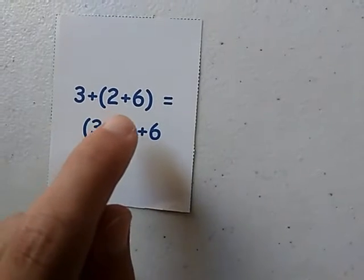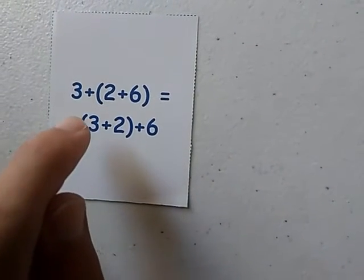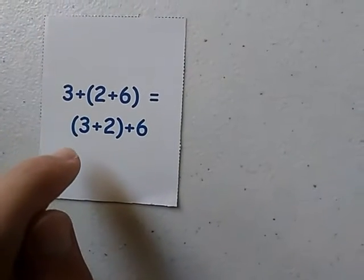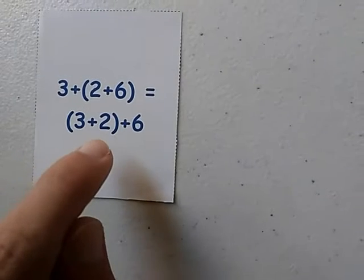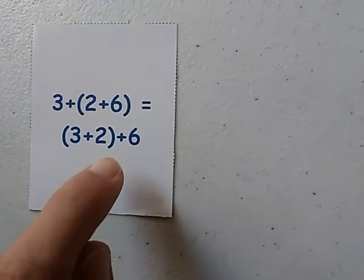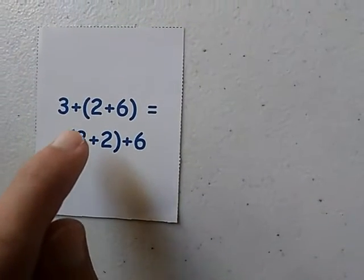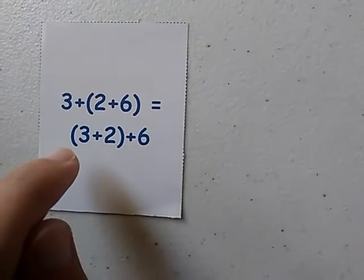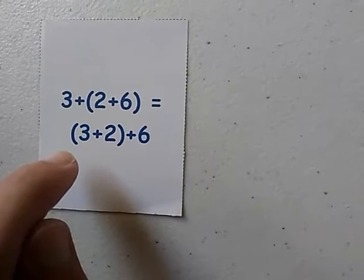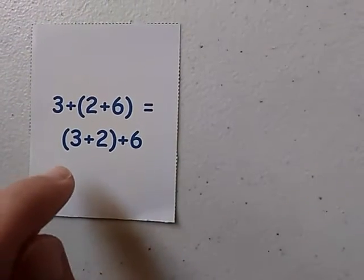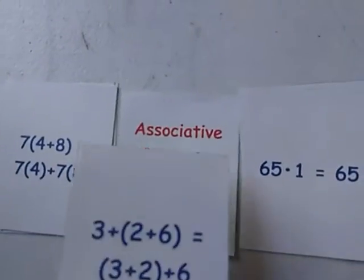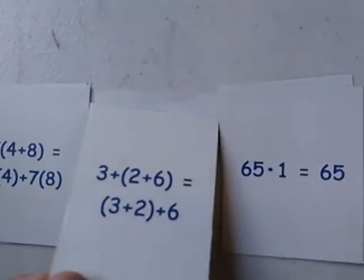2 plus 6 plus 3 equals 3 plus 2 plus x. Note that the order grouping of the parentheses does not matter. This is related to Addition, so this is the same thing as the Associative Property of Addition.